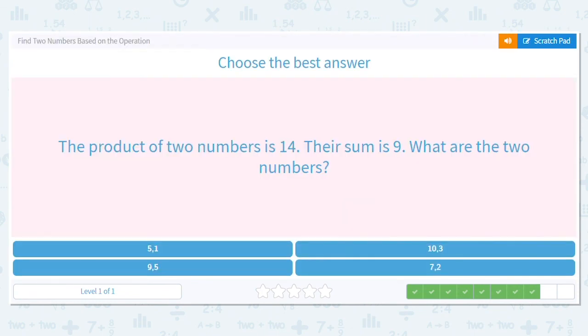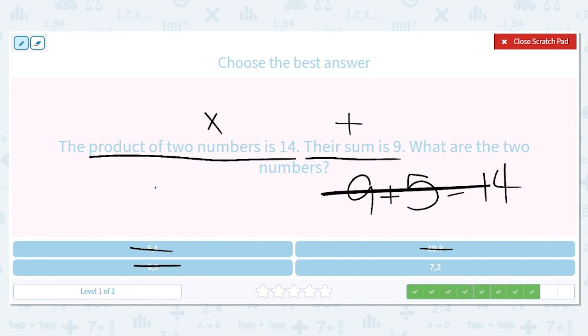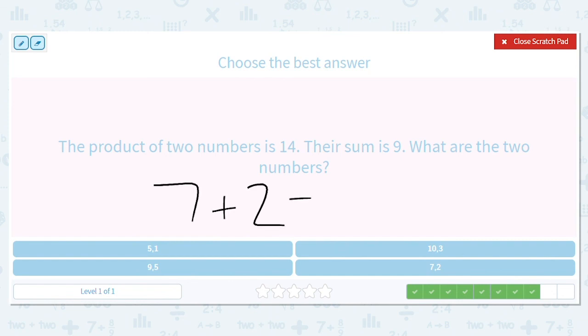Next one. The product of two numbers is 14. Their sum is 9. What are the two numbers? So if I'm multiplying two numbers and they equal 14, but I add them up and they equal 9, let's eliminate down below. I can get rid of 5 and 1, because when I multiply them, I get 5. I can also get rid of 10 and 3, because when I multiply them, that's 30. So it's either 9 and 5 or 7 and 2. Well, if I add 9 plus 5, I get 14. So it can't be that. But if I do 7 plus 2, I get 9. So that means 7 and 2 is my answer.